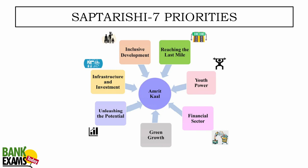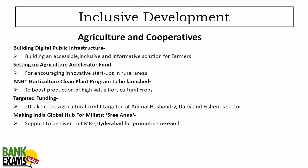Let's start the session with the seven priorities. Nirmala Sitharaman, while giving the budget speech, told us about Saptarishi — the seven priorities of the budget: inclusive development, infrastructure and investment, unleashing the potential, green growth, financial sector, youth power, and reaching the last mile. After that, tax reforms, changes in taxes, and budget allocation to various schemes will be discussed, along with how to reach the Amrit Kaal.